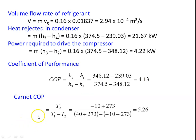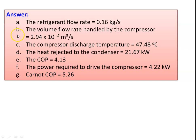The Carnot COP based on temperature = TL / (TH - TL) = 263 / (313 - 263) = 5.26. The vapor compression cycle COP = 4.13. Answers: refrigerant flow rate = 0.16 kg/s, volume flow rate = 2.94 × 10⁻⁴ m³/s, compressor discharge temperature = 47.48°C, heat rejected in condenser = 21.67 kW, COP = 4.13, power required = 4.22 kW, Carnot COP = 5.26.